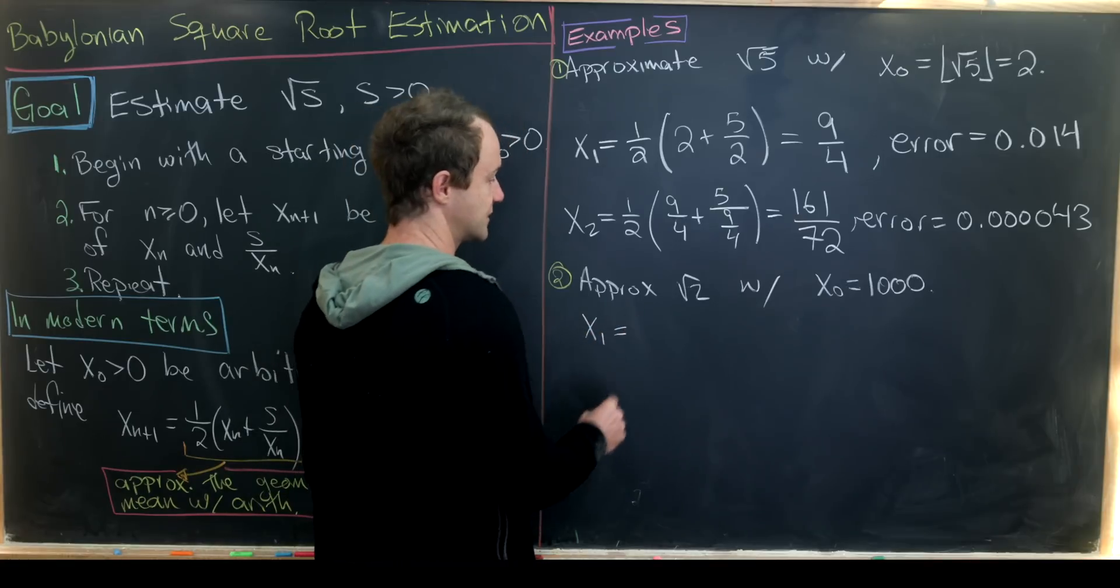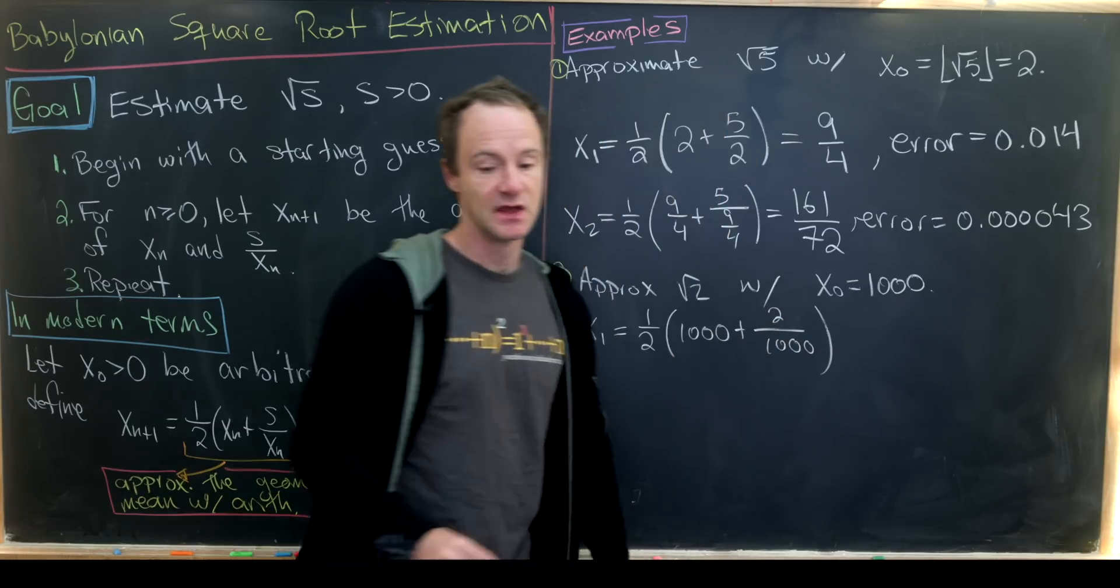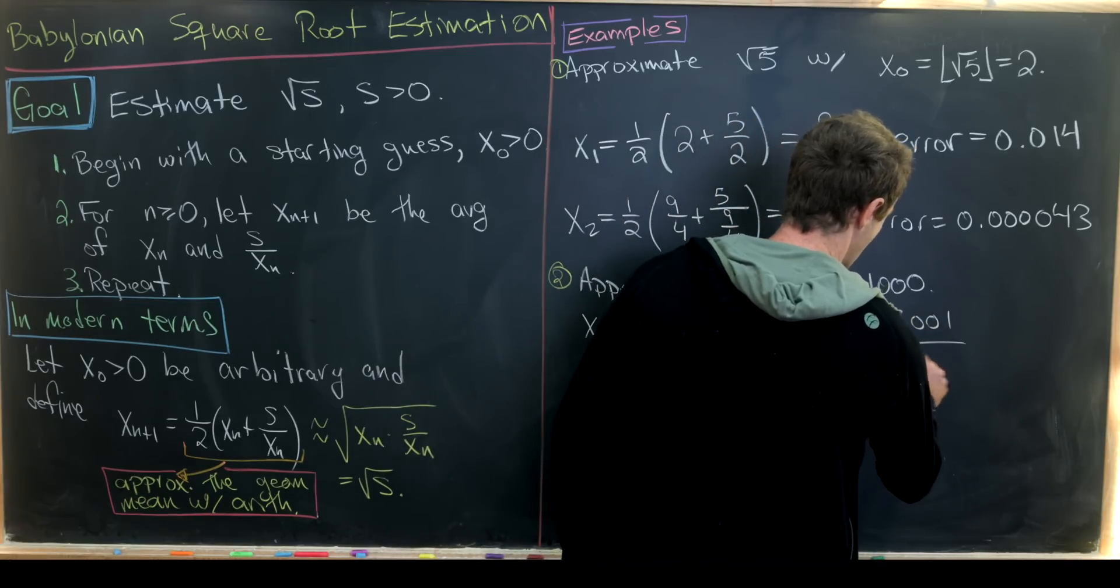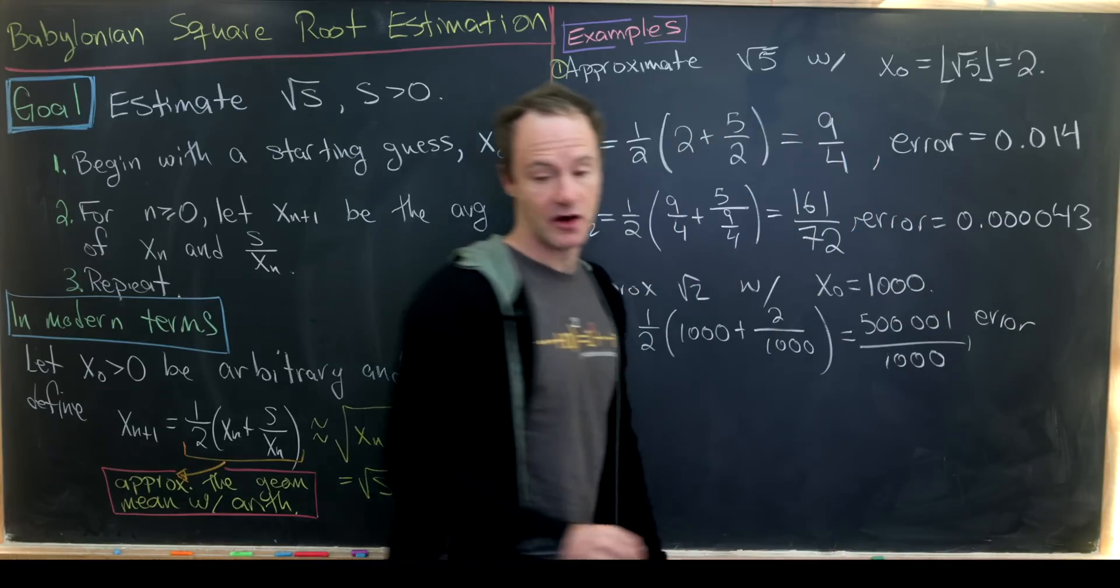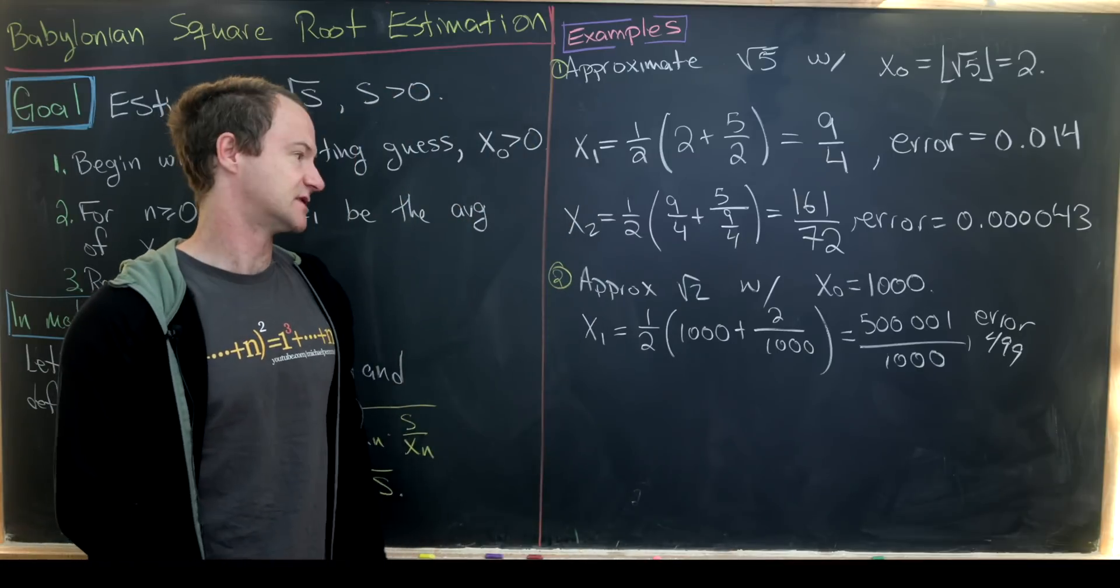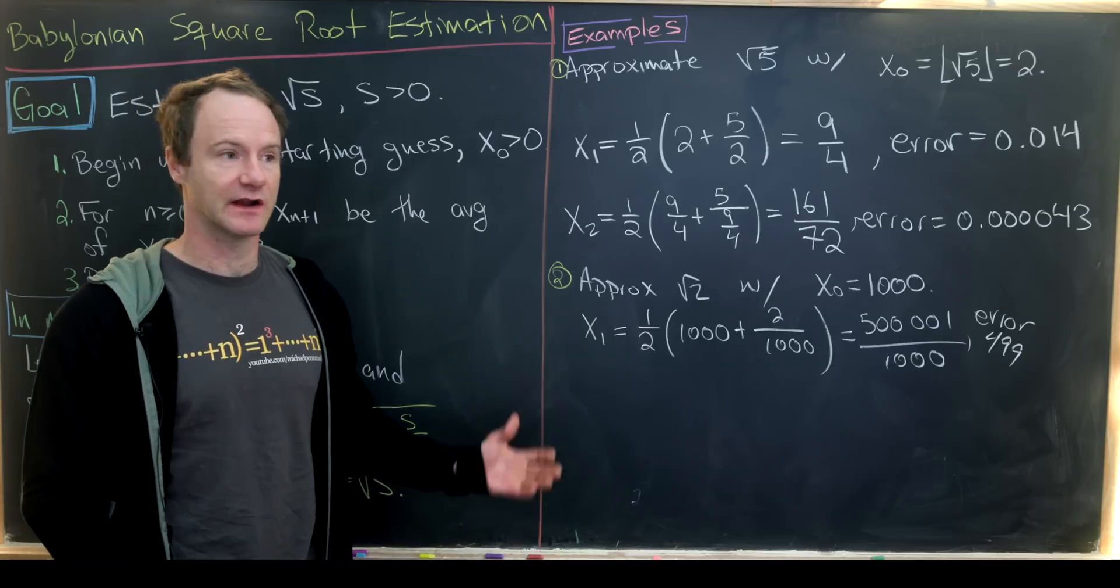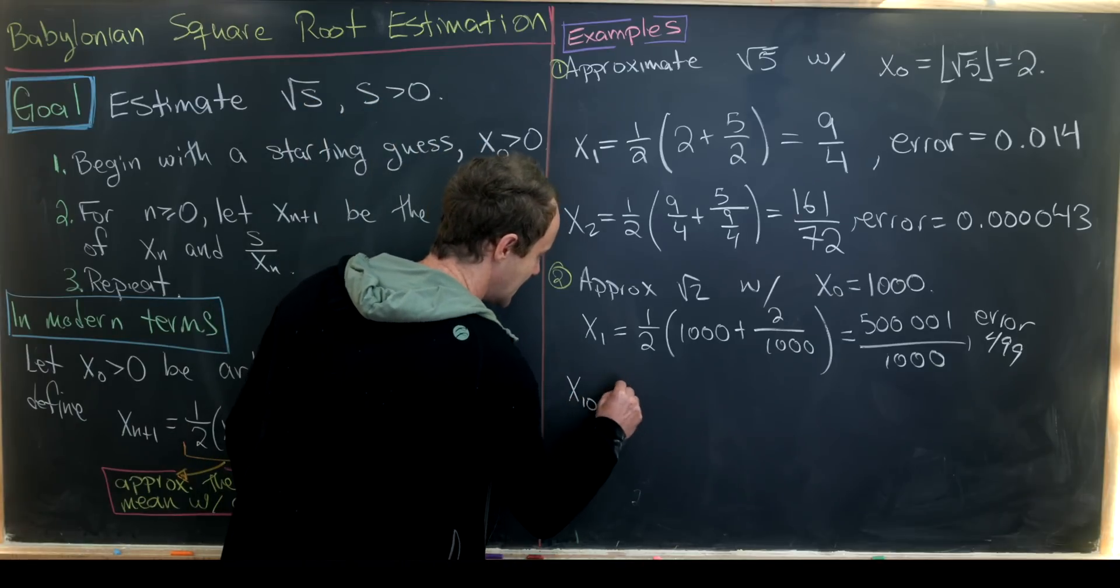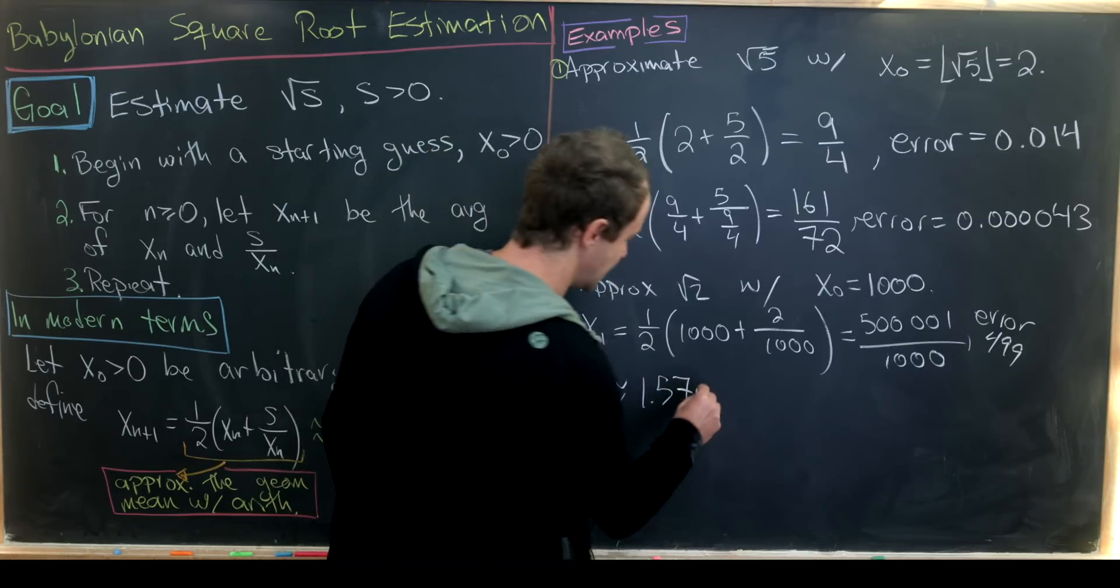Let's calculate x₁ first. That's going to be ½(1,000 + 2/1,000). And you can calculate this out, we end up with 500,001/1,000. And the error in this case is 499. I rounded that a little bit, but that's close enough since the error is so large here. I won't calculate x₂ or x₃, I'll just calculate x₁₀ and x₂₀, but I did this in a computer.